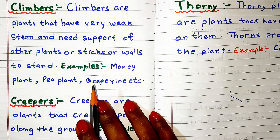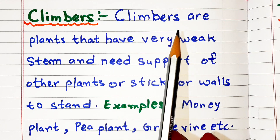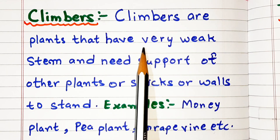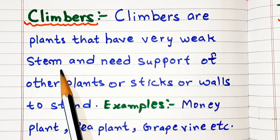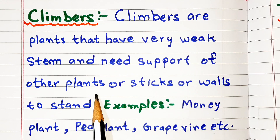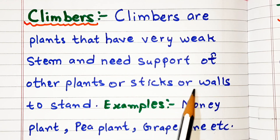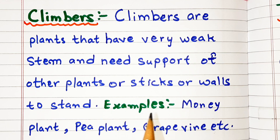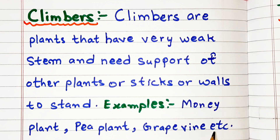Climbers are plants that have a very weak stem and need the support of other plants, sticks, or walls to stand. Examples: money plant, pea plant, grapevine, etc.